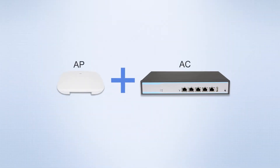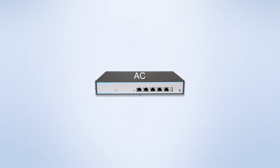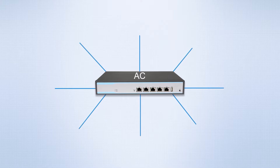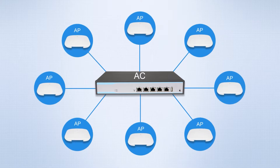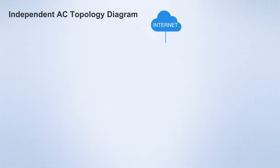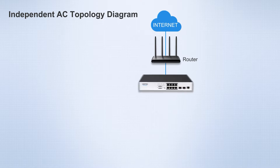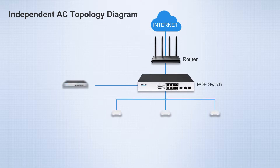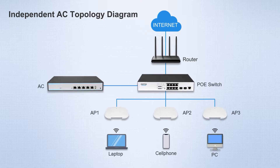Let's understand their respective modes of operation. A wireless AP is usually used with an AC. The AC is responsible for managing all wireless APs in the wireless network, while the AP is responsible for accessing the wired network. When setting up with an independent AC, it handles data forwarding and management, and you still need a network cable to connect the router and a PoE switch to power the APs.